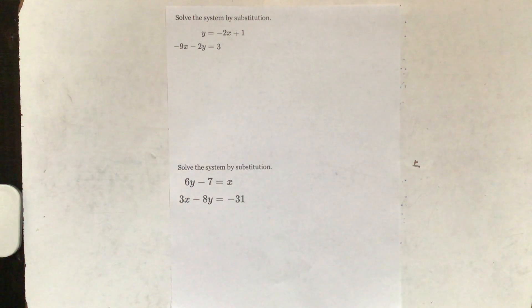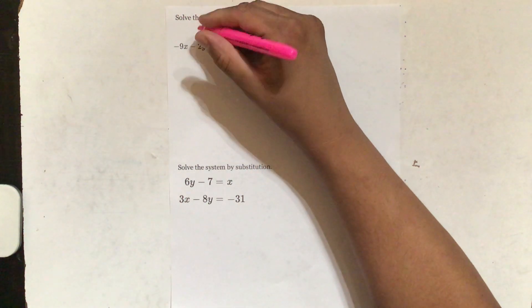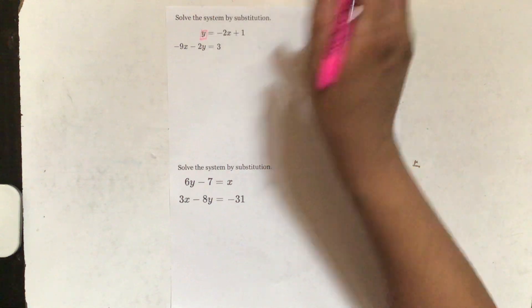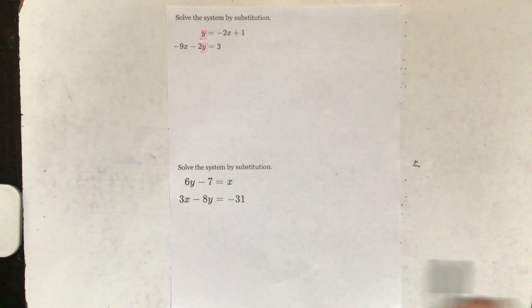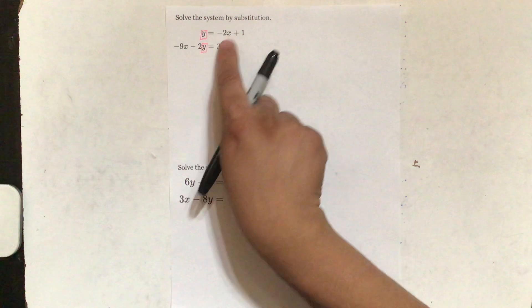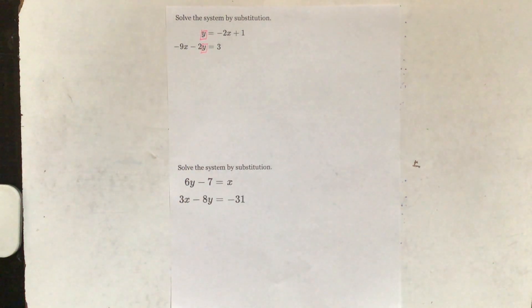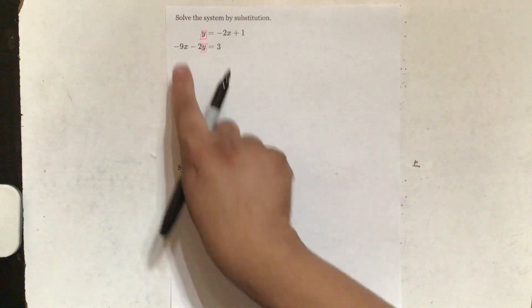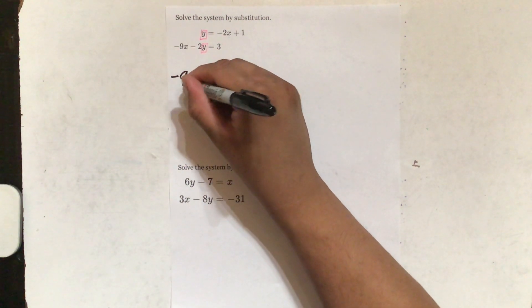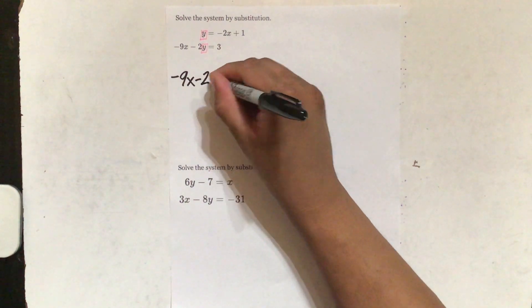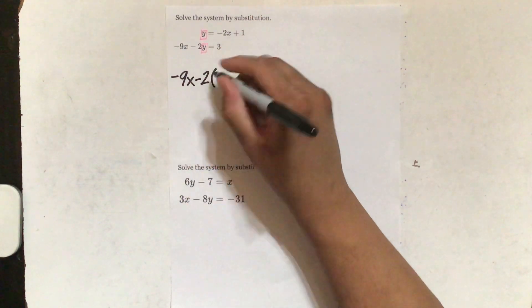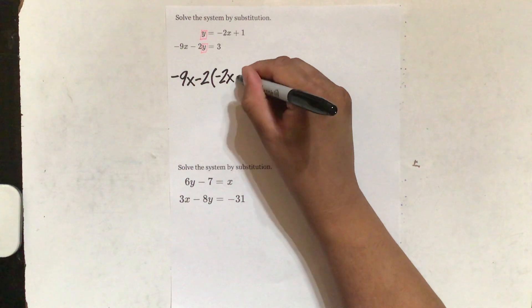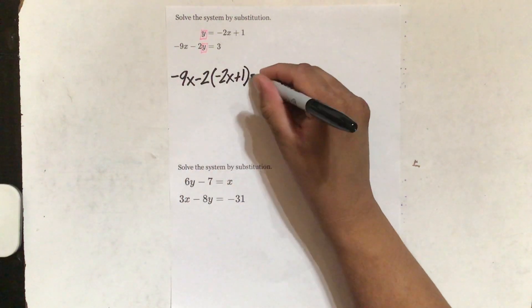So let's do a couple of examples here. Remember that this y here is already by itself. So solve the system by substitution — this y is the same as this y. That means I can plug this in to this y right here, which is exactly what I'm going to do. So I'm going to copy this second equation: negative 9x minus 2, but I'm going to put a parenthesis and instead of writing y, I'm going to write these two terms — negative 2x and plus 1 — and then equals 3.